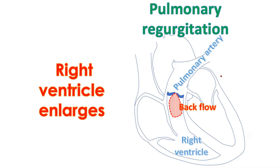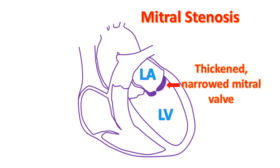The right ventricle enlarges in response to this leak and later becomes thickened as well to pump more blood. The pulmonary artery can also enlarge to accommodate the extra blood being pumped out by the right ventricle.